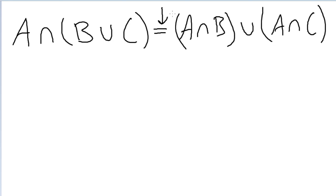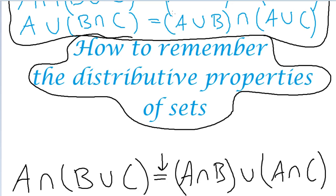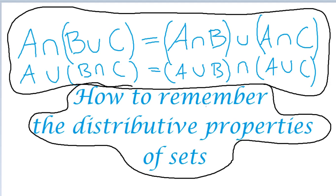And the reason that it might seem difficult is because we don't usually deal with different versions of the distributive property, right?